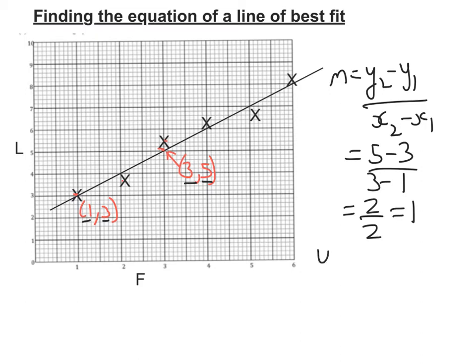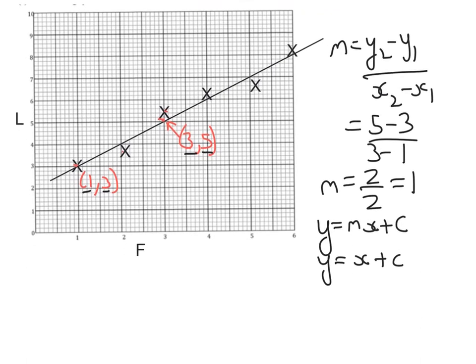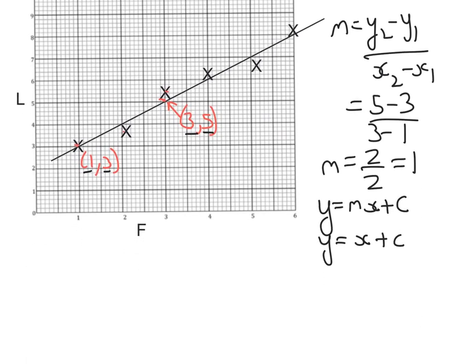So I've got my equation of a straight line, it's y equals mx plus c. But with my gradient of 1, we get y is equal to x plus c. Now, if you remember, we sub in a point that we know to find c.